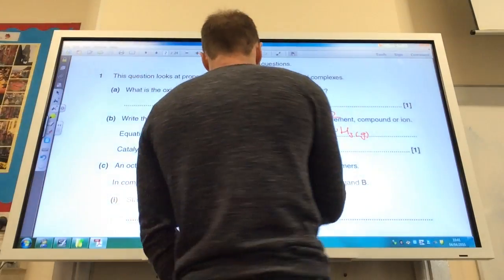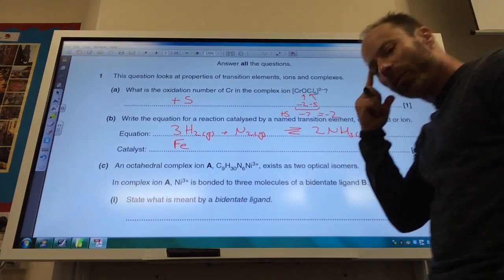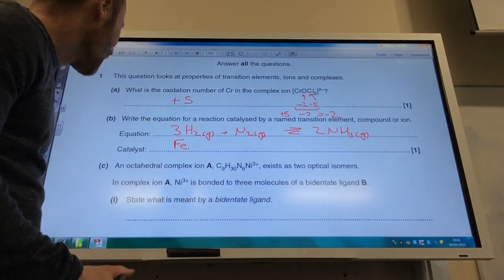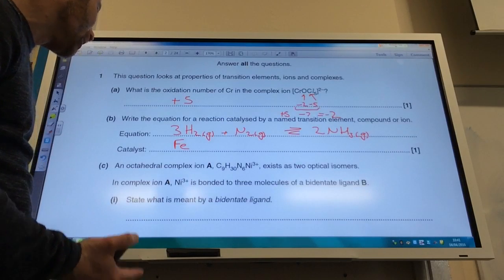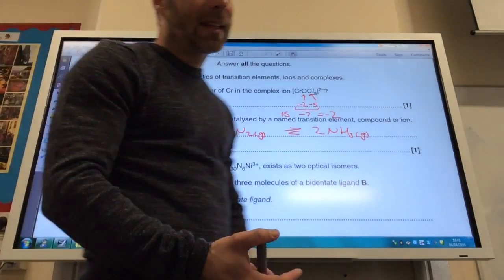Optical complex A has that formula that exists as two optical isomers. So if you think optical isomers, that's obviously bidentate ligands involved in some way. And it tells me it is bonded to three molecules of a bidentate ligand B. What is meant by bidentate ligand?